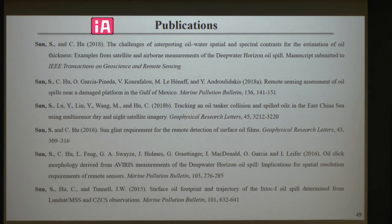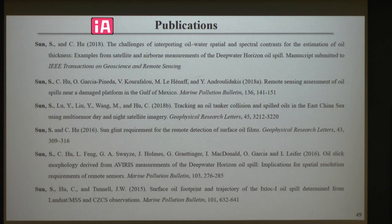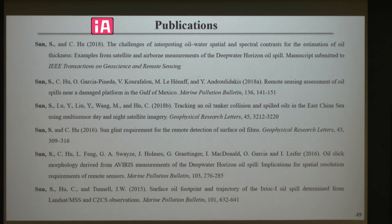Your glint coefficient will change over an image — what value did you use as the threshold for an individual image? For each image, each pixel will have a glint coefficient. If a pixel's glint coefficient is less than the threshold, I will not consider that pixel. So it's pixel-based, not image-based.